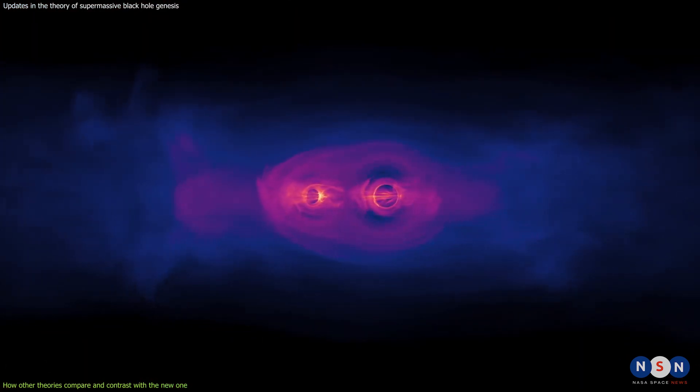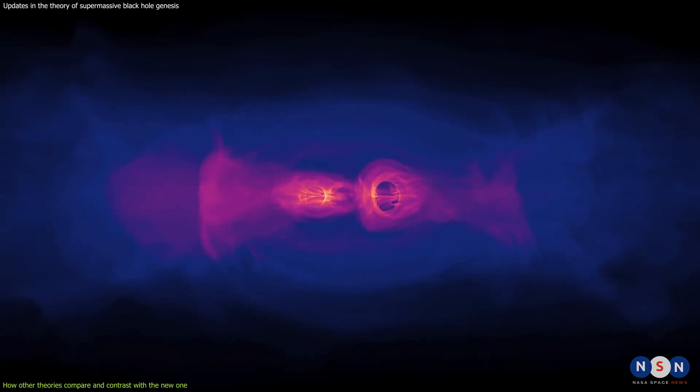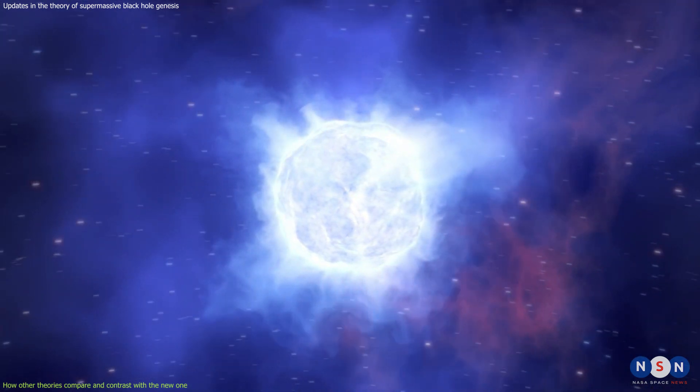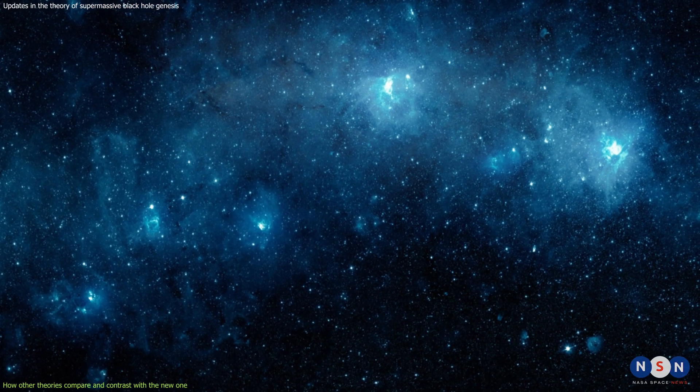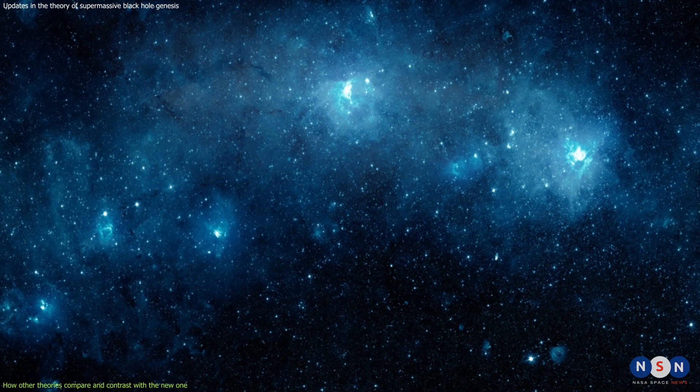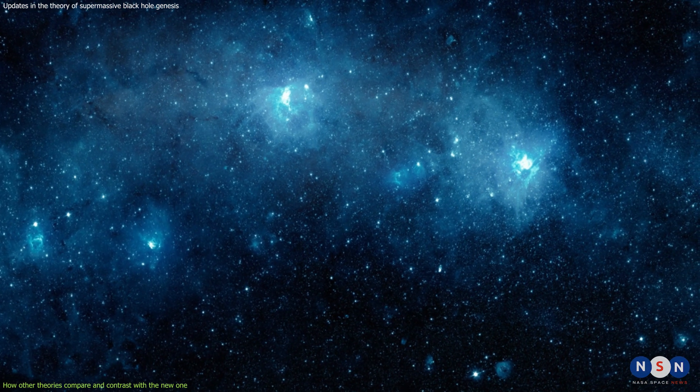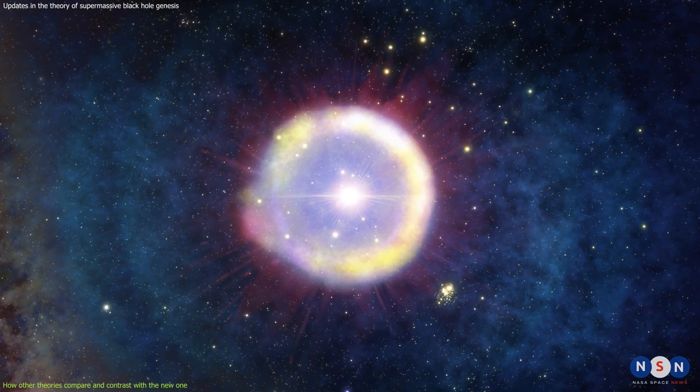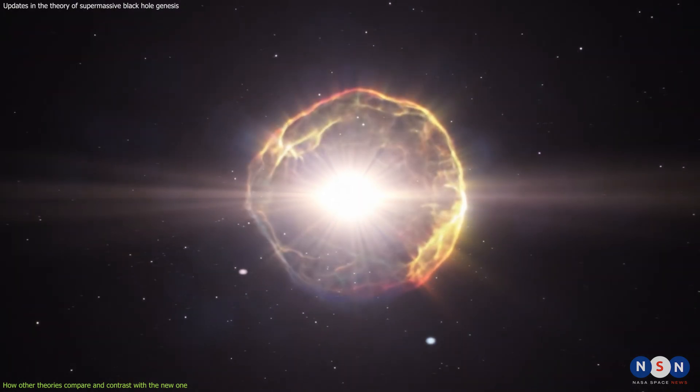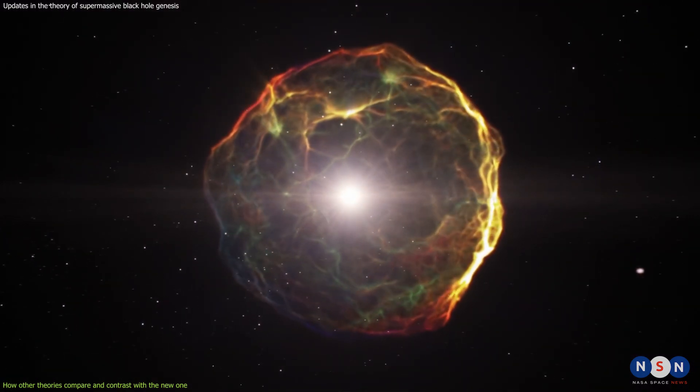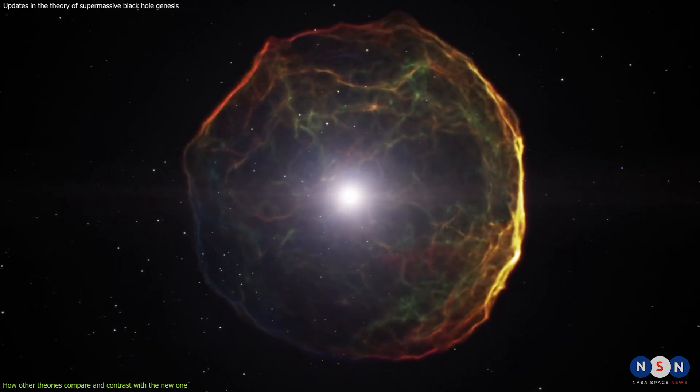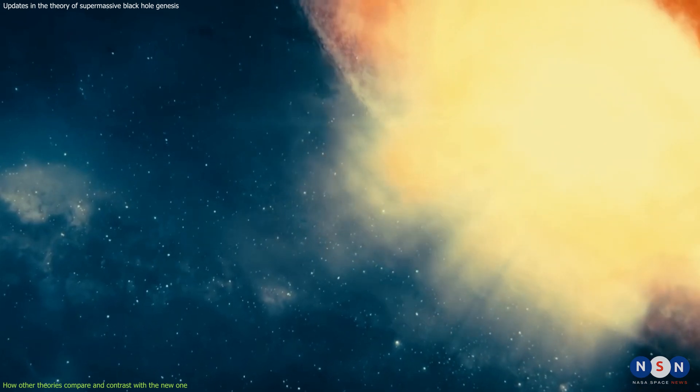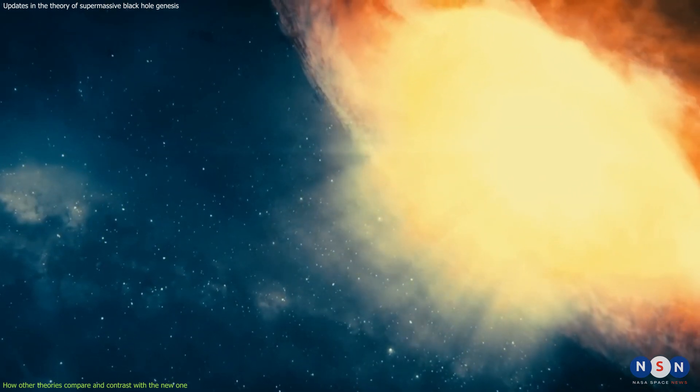One of the most popular theories is that supermassive black holes form from the mergers of smaller black holes created by the deaths of the first massive stars in the early universe. These stars, known as Population III stars, were very different from the stars we see today because they were made mostly of hydrogen and helium and they were much more massive and luminous than modern stars. They also lived very short lives, only a few million years, before exploding as supernovae or collapsing into black holes. These black holes could then merge with each other or with other stars or gas clouds, forming larger and larger black holes over time.